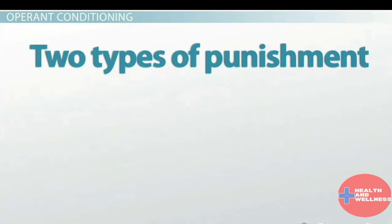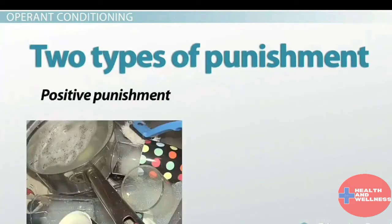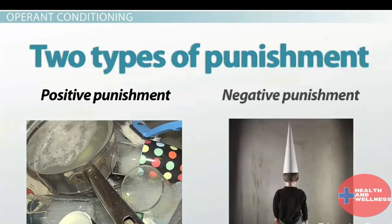There are also two types of punishment in operant conditioning. Positive punishment is the addition of something undesirable — examples would be a child receiving a spanking or extra chores for misbehaving. The other type is negative punishment, which is the removal of something pleasing — examples would be a child being placed in time out or losing video game privileges for misbehavior.